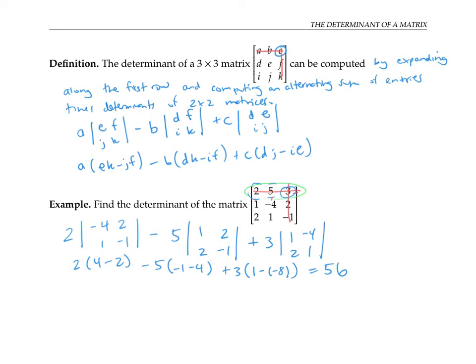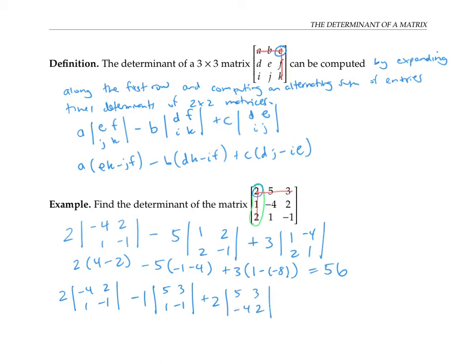Now I have a question for you. What's so special about expanding along the first row? I invite you to try expanding along the first column instead — do the same sort of process: take one number at a time, cross out the row and column it's in, and do an alternating sum. When I do that, I get two times the determinant of negative four, two, one, negative one, minus one times the determinant of five, three, one, negative one, plus two times the determinant of five, three, negative four, two. And that works out to 56.